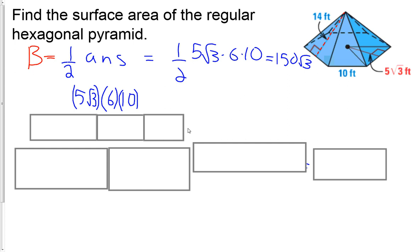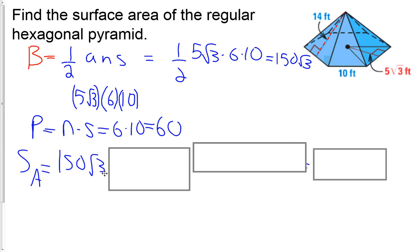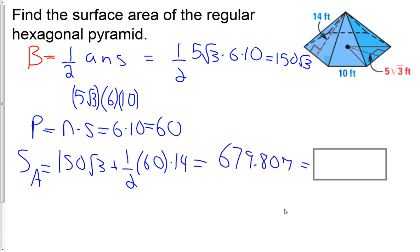Perimeter is, we've got 6 of them. Perimeter equals number of sides times sides, so 6 times 10 is 60. Then plugging it in, 150 square root of 3 plus half of 60 times that slant height of 14 gives us 679.807. We round up, just showing you how to do 3 decimals, round it up to 679.81 feet squared.